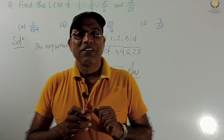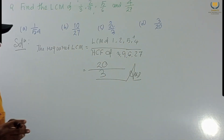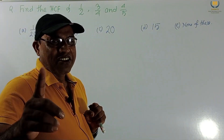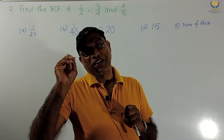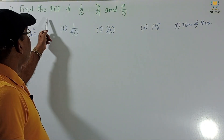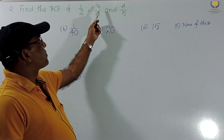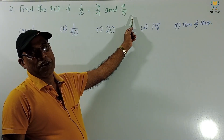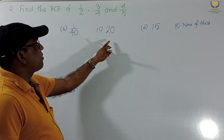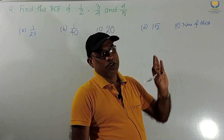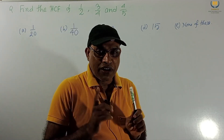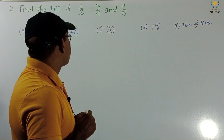This is our rule — we have to find it in this way. The first problem, LCM of fractions, is done. Now consider the HCF problem: Find the HCF of 1/2, 3/4, and 4/5. The options given are 1/20, 1/40, 20, 15, and none of these. We want to find which is the correct option.